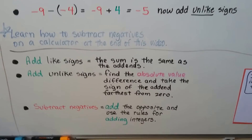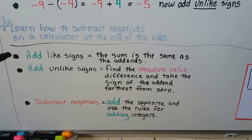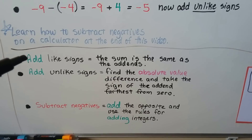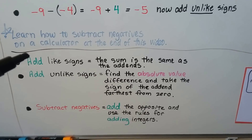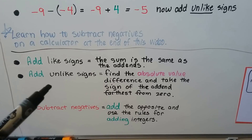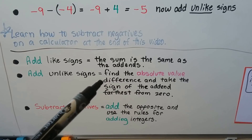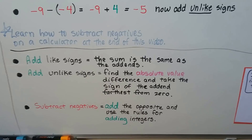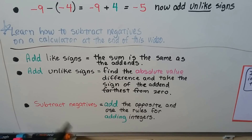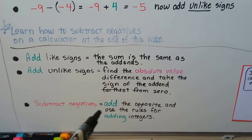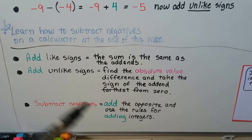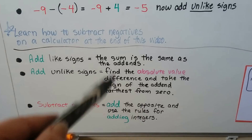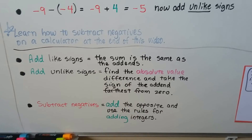Here are the rules again. When you're adding like signs, the sum takes the same sign as the addends — two positives give a positive answer, two negatives give a negative answer. When you're adding unlike signs, you find the absolute value difference and take the sign of the addend that's farthest from zero. When you're subtracting negatives, you add the opposite and then use whichever rule for adding integers applies.